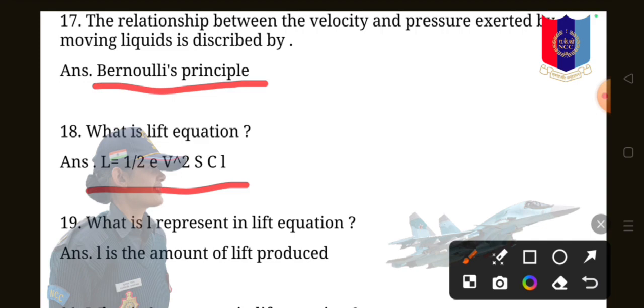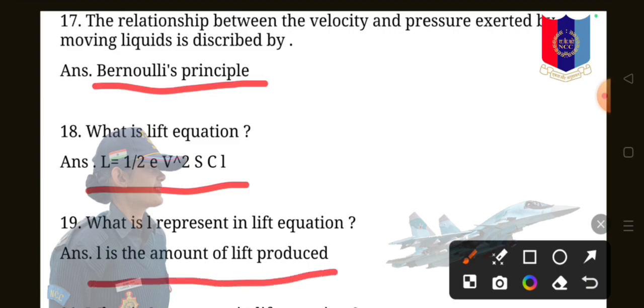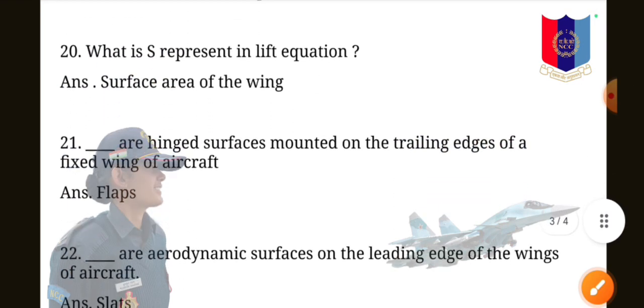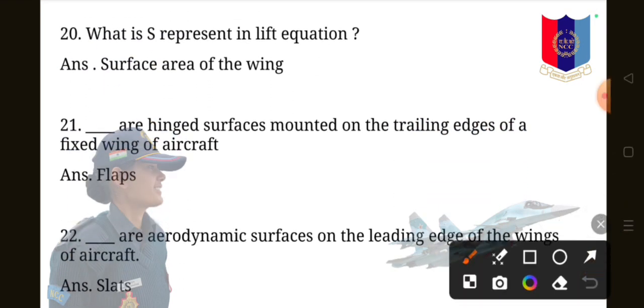Question 19: what is L represented in lift equation? Small L represents the amount of lift produced. Question 20: what is S represented in lift equation? S represents surface area of the wing. Question 21: flaps. I have given all questions, almost all of them. You can read one more time. But if you can read the question of MCQs, I will give them all of you.